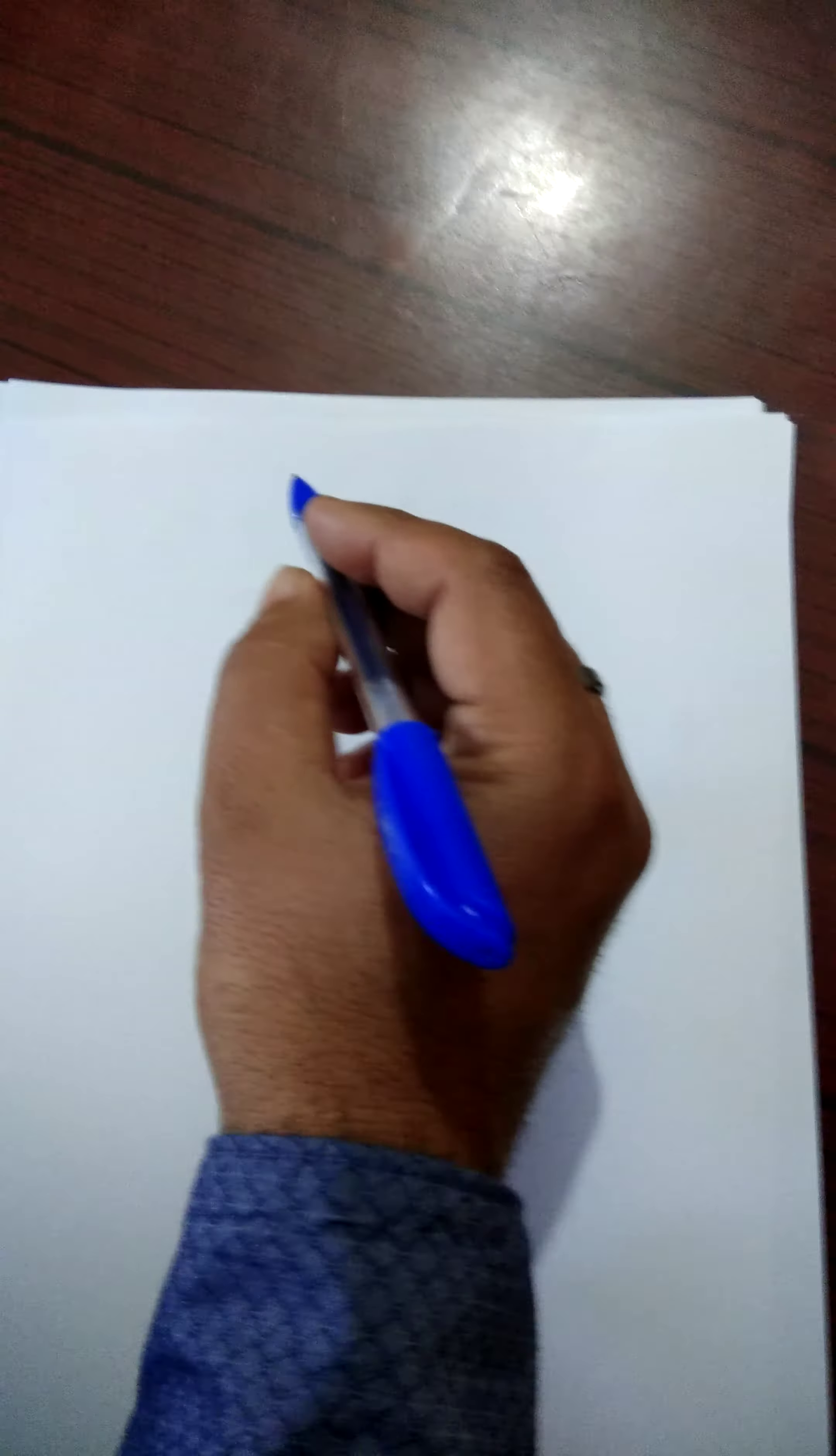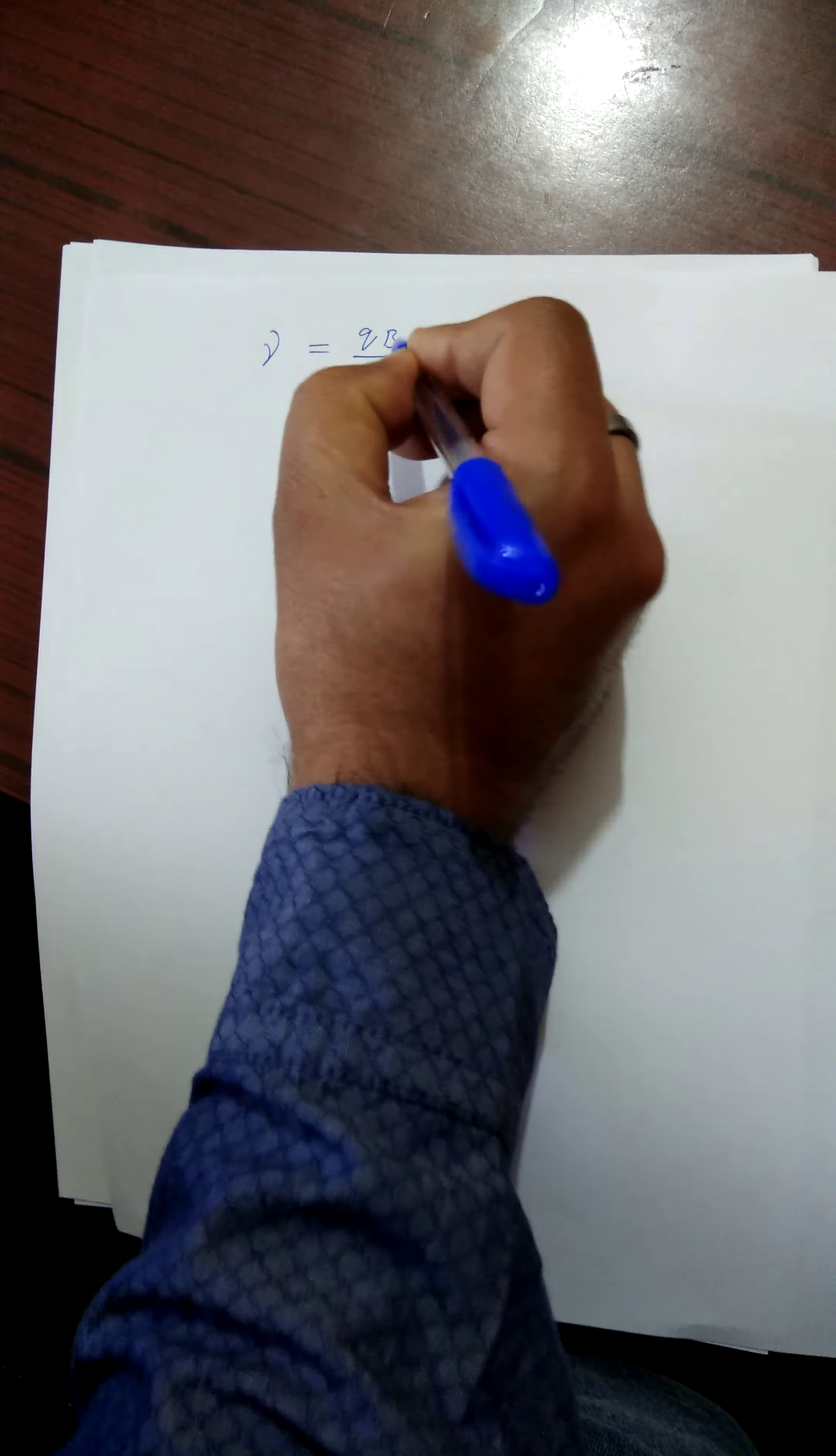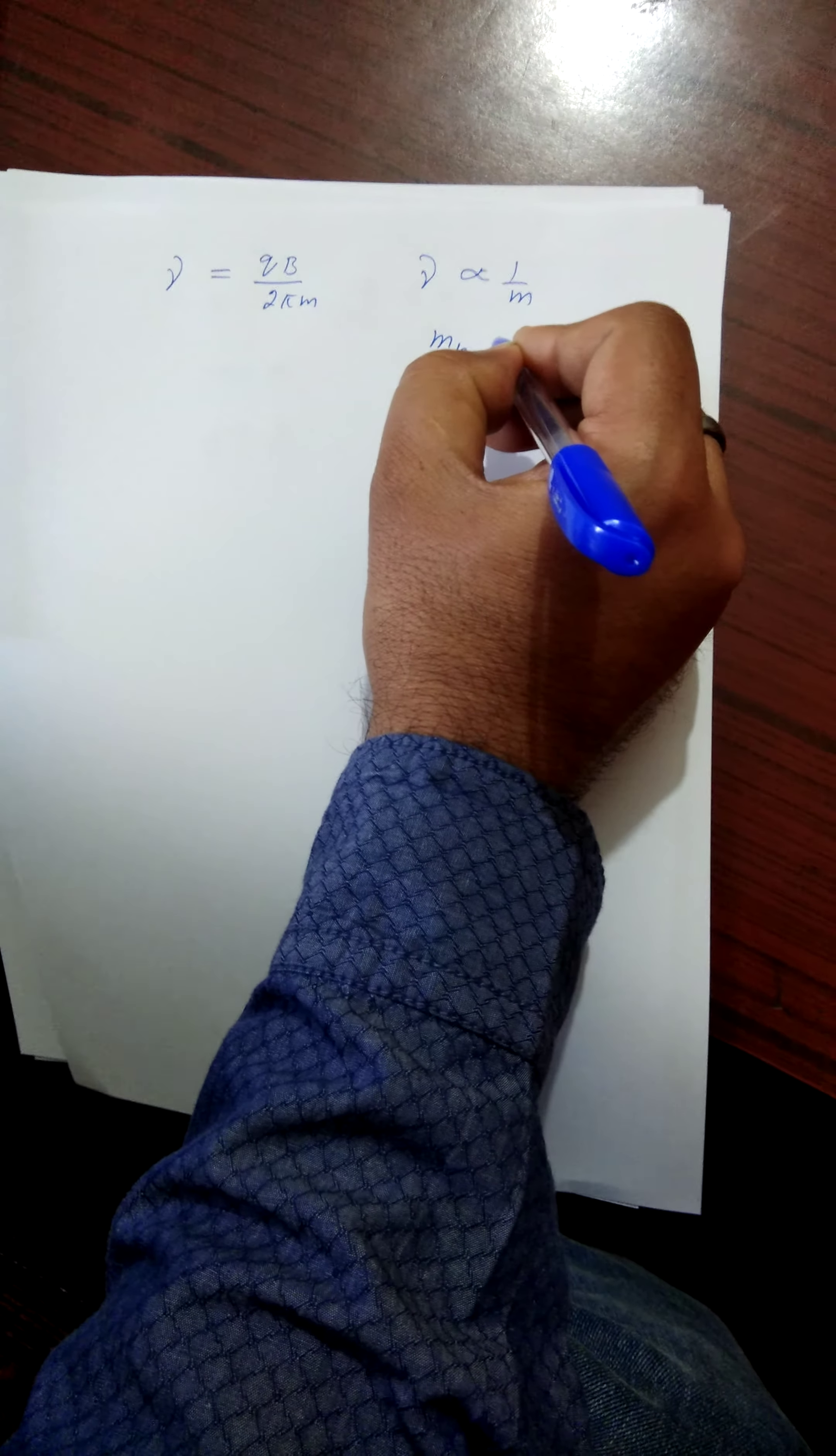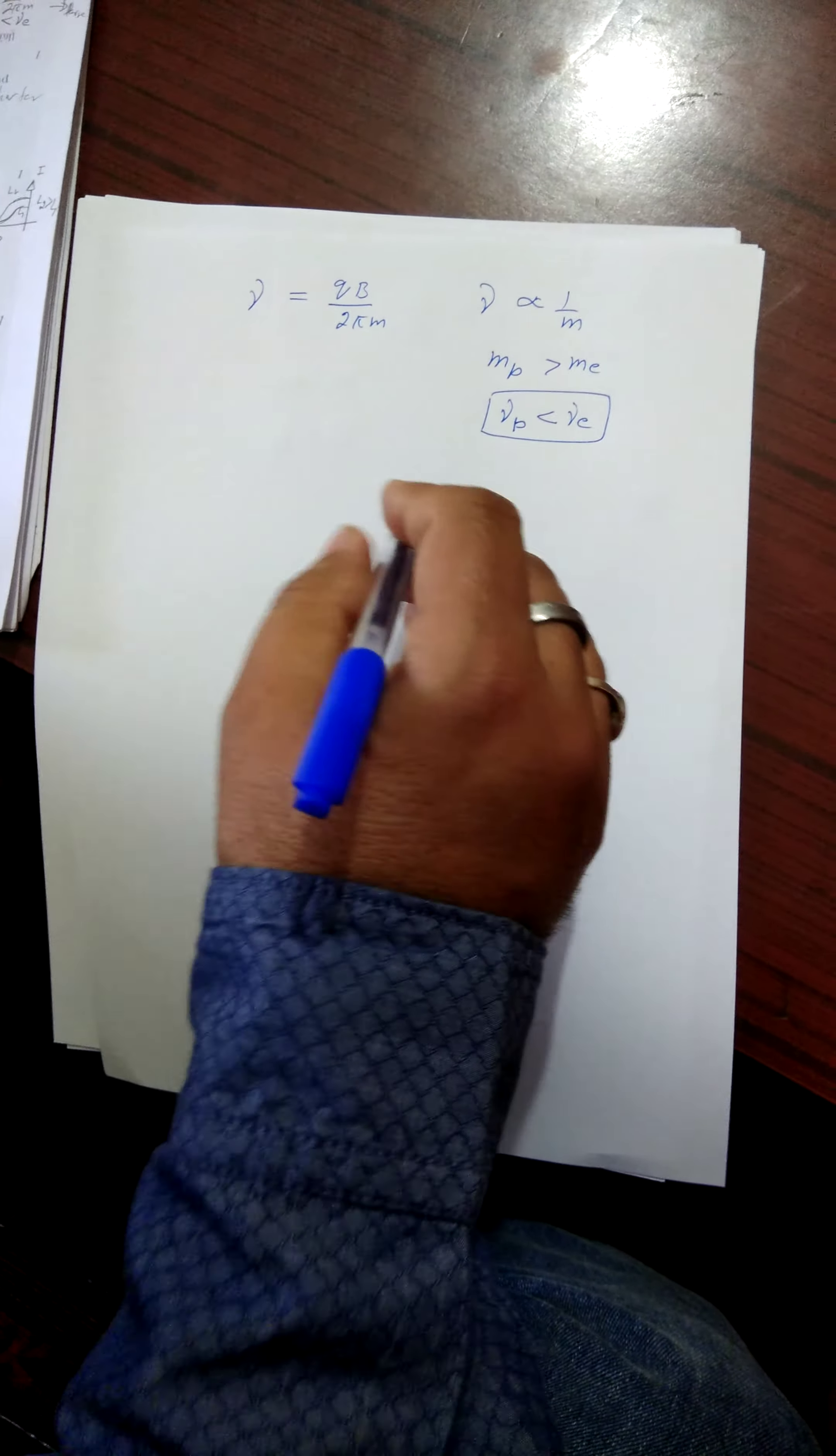Now see the solution of this question. As we know that when any charged particle move perpendicular to the magnetic field, it move in the circular path with frequency which is given by nu is equal to QB divided by 2 pi M, where M is the mass of the charged particle. Therefore frequency is inversely proportional to the mass of the charged particle. As we know mass of proton is more than the mass of electron. Therefore frequency of proton is less than the frequency of electron. So this is the answer of the first question.